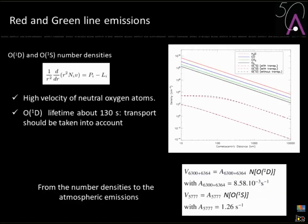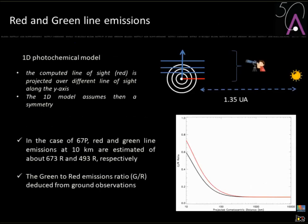Solving the continuity equation with transport included — especially for the red line, which has a very long lifetime of about 130 seconds — you get the number density of O(1D) and O(1S) throughout the cometary atmosphere. From this you can estimate the emission by integrating along the line of sight between the observer and the comet, looking at the emission coming from each line.